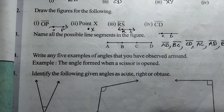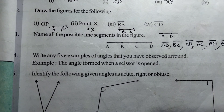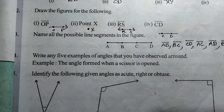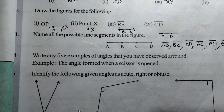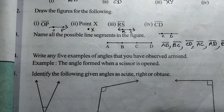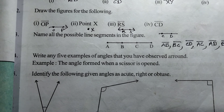Fourth example: the edge of a board — in your classroom, the blackboard edges form angles. Fifth example: the letter V is one example of angle formation. A bird's beak also forms an angle. These are real-time examples of angles observed around us.